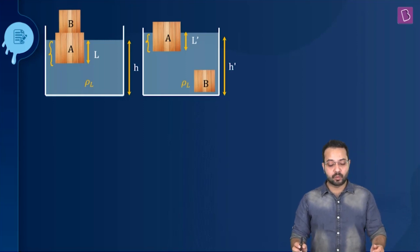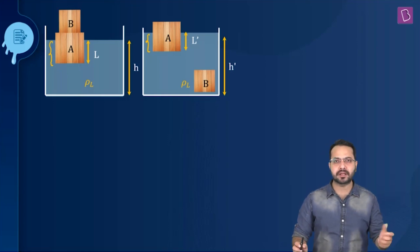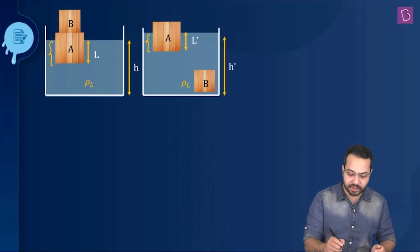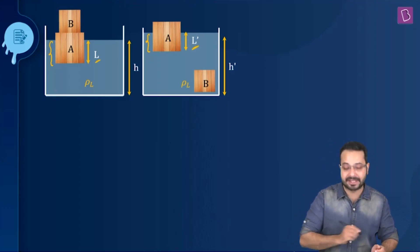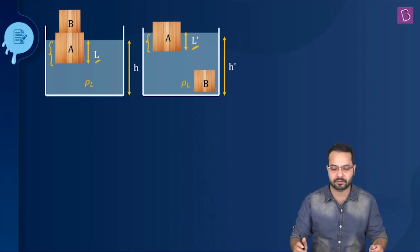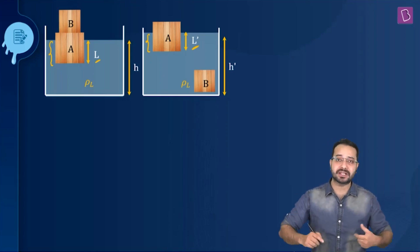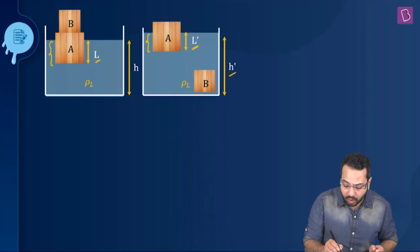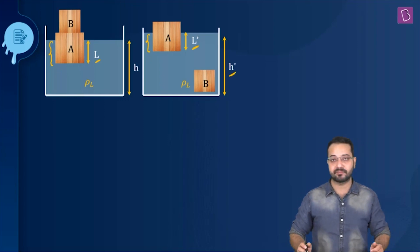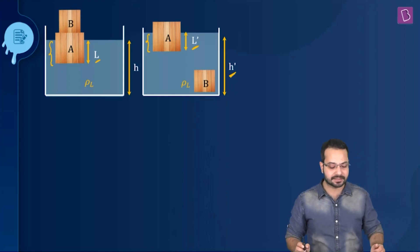When block B gets submerged inside the water, the displaced volume of liquid now supports only the weight of block A. So it has to support a lower weight, meaning the volume of liquid displaced will also be lower, so L′ is less than L. That is straightforward. What we need to explain is why H′ increases.